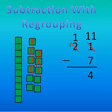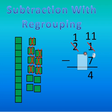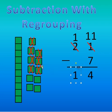Now I move over to my tens place. Since the number I'm subtracting doesn't have a number in the tens place, that's like saying 1 minus 0, because there's nothing there. 1 minus 0, or 1 minus nothing, is just 1, because I don't have anything over here. I don't have to cross out anything in my tens place. So 21 minus 7 — my answer is 14.